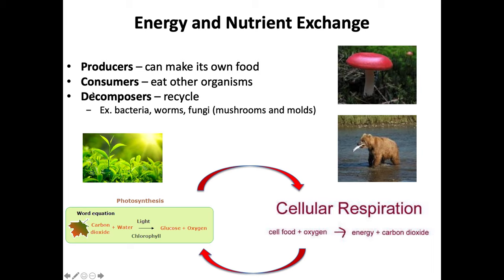Also in the process, we have organisms called decomposers. What they do is recycle nutrients — they break down dead organic material into simple molecules, into nutrients that can be deposited into the soil for plants to use. Some examples are bacteria, worms, and fungi, which include mushrooms and mold. If you see a mushroom, think that they are decomposers — breaking down material and depositing it into the soil so that plants can use it.